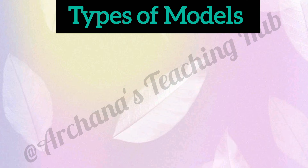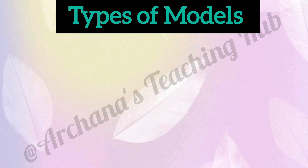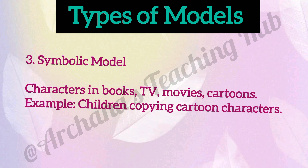Now, types of models. One: live model — a real person doing the behavior, for example teacher, parent and friends. Two: verbal model — someone tells the steps, for example a teacher explaining how to solve a problem. Three: symbolic model — characters in books, TV, movies, cartoons. For example, children copying cartoon characters.